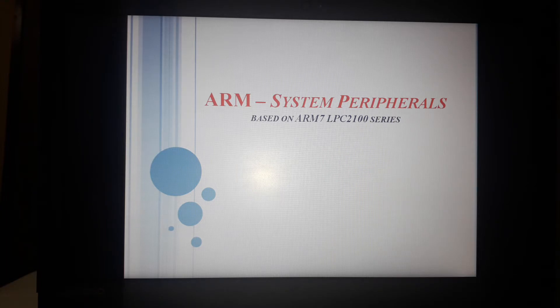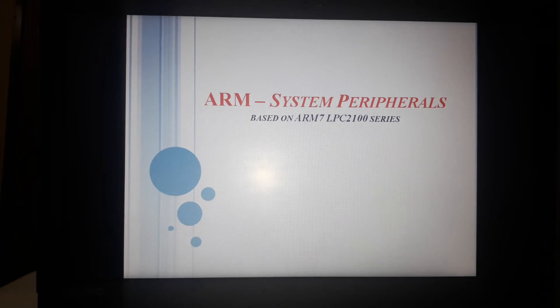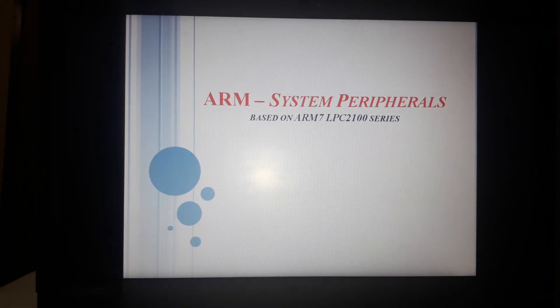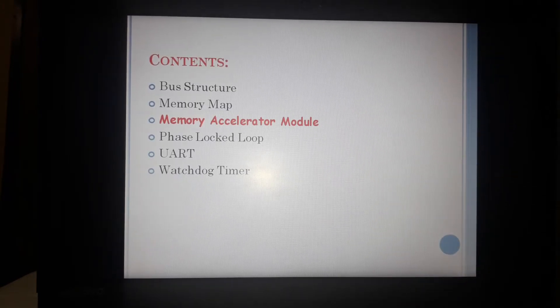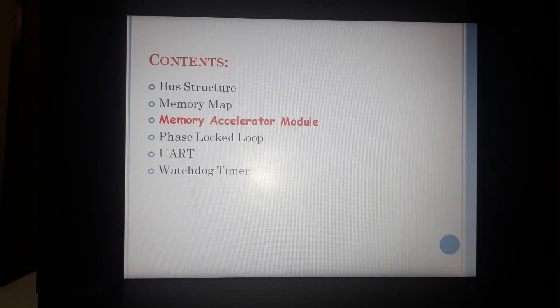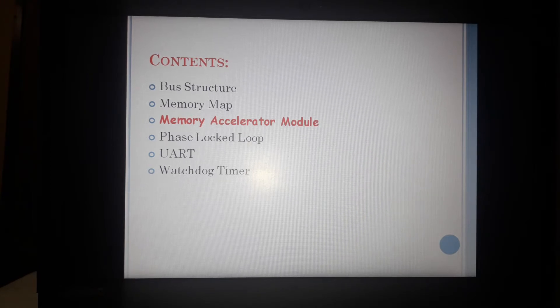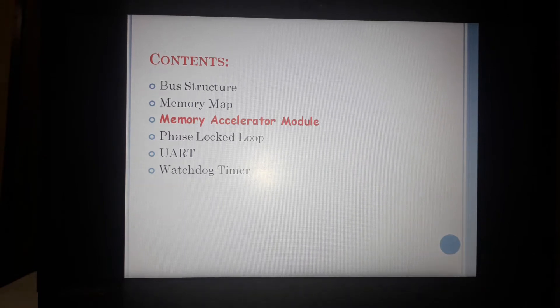When we talk about system peripherals in ARM7, they primarily refer to bus structure, memory map, memory accelerator module, phase lock loop, UART and a watchdog timer loop. But in this presentation, we are going to talk about memory accelerator module.